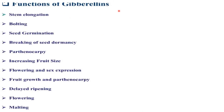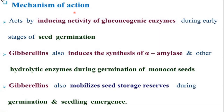Functions of gibberellins: they help in stem elongation, bolting, seed germination, breaking seed dormancy, parthenocarpy, increasing fruit size, flowering and sex expression, fruit growth, and delayed ripening. Mechanism of action: gibberellins act by inducing activity of gluconeogenic enzymes during early stages of seed germination. They also induce synthesis of alpha-amylase and other hydrolytic enzymes during germination of monocot seeds, and mobilize seed storage reserves during germination and seedling emergence.